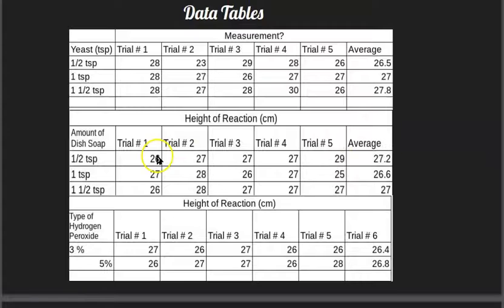The averages in our trials measured in centimeters for dish soap were 27.2, 26.6, and 27. The different percentages of hydrogen peroxide measured in centimeters were 26.4 and 26.8.